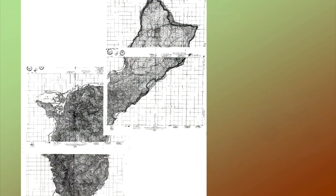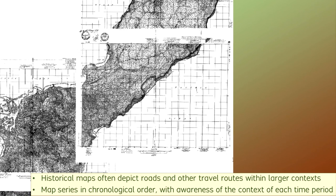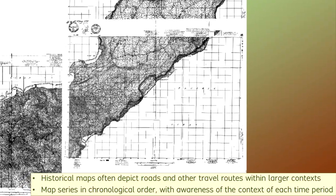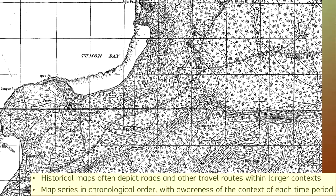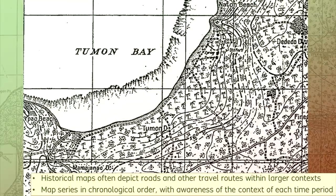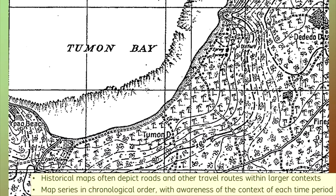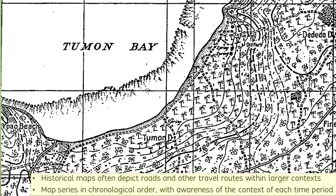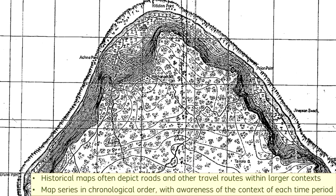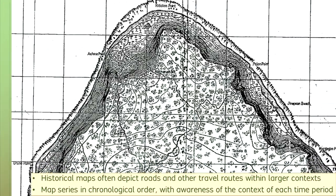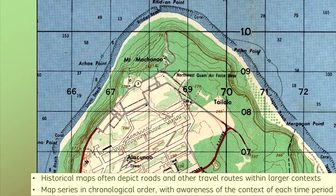Historical maps can reveal considerable information about transportation routes. I can illustrate with one example here using just three maps from Guam in the years 1914, 1944, and 1954. Within those few decades, the road system changed significantly. In 1914, the major roads connected the larger villages and military bases, especially at the naval port. Several smaller roads were unimproved or unpaved, used mostly for foot traffic or for carts pulled by water buffalo. Much of the northern portion of Guam included no roads or very little road access. This situation changed substantially by 1944, and then continued to develop by 1954 into nearly the same road system that exists today.